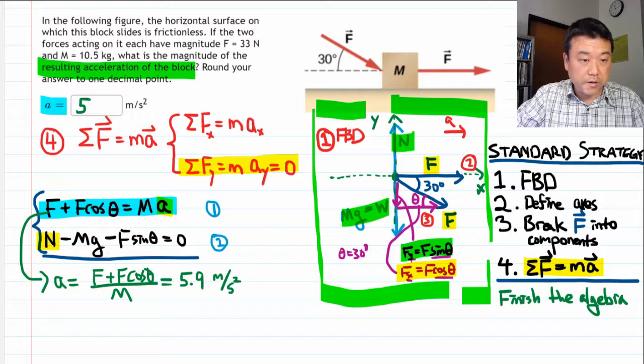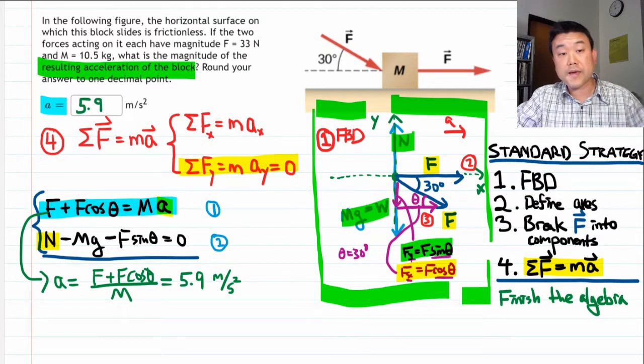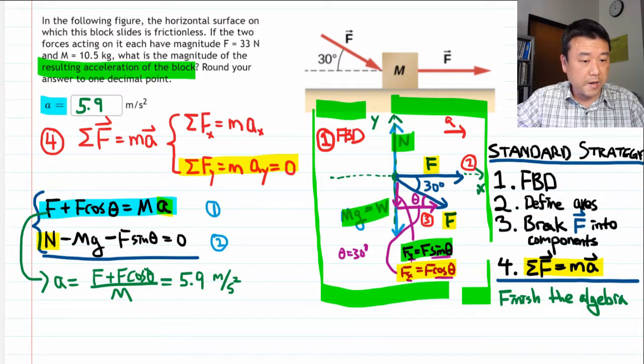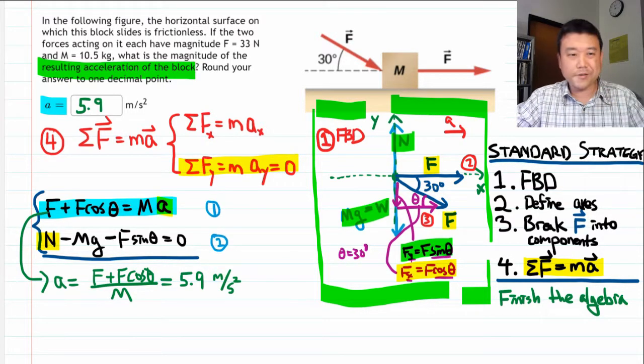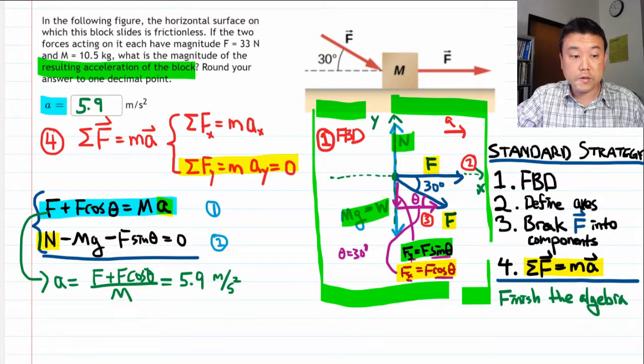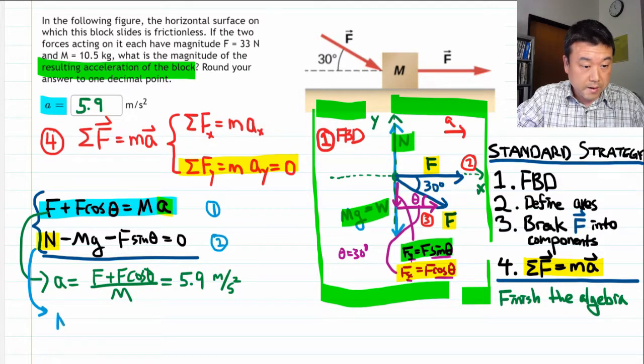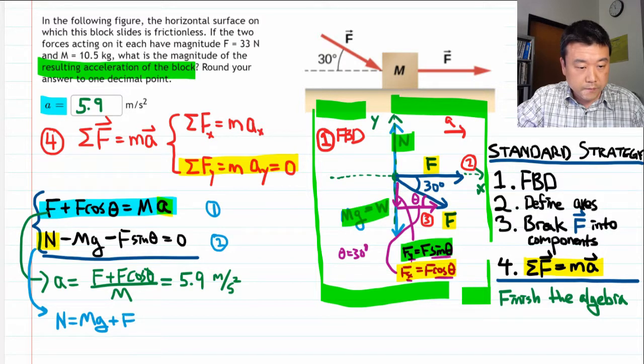And we are actually done there. For the purpose of this question, you don't need to bother with the y-axis. But let me finish this up so that I can say one thing I want you to say. So solving the second equation for the normal force, N, this is what you get, N is equal to Mg plus F sine theta. And this is what I want you to point out.